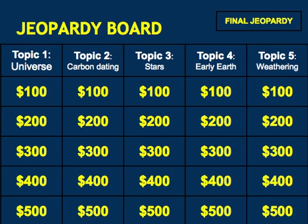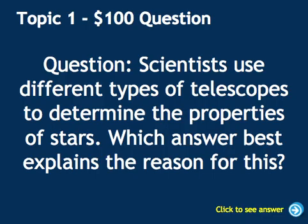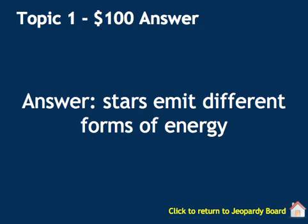Here are some of the general topics, but since this is singular, we won't be playing the game today. Question: scientists use different types of telescopes to determine the properties of stars. Which answer best explains the reason for this? You're going to be given a list of choices, and the answer is that stars emit different forms of energy, so you would need different telescopes to see those.